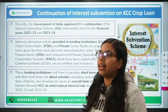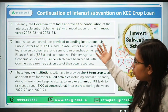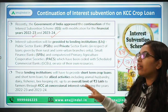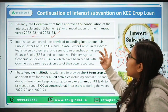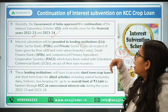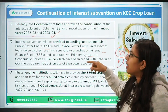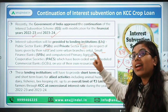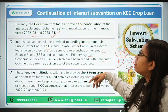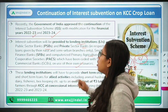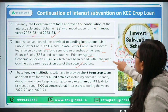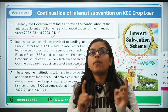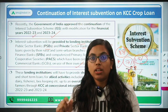Recently, the government has approved continuation of the scheme for financial years 2022-23 and 2023-24. Interest subvention will be given to lending institutions such as all public sector banks, private sector banks, small finance banks, and computerized primary agricultural cooperative societies. PACOs incorporated with scheduled commercial banks using their own resources are also eligible. Payment banks are excluded because they do not provide any kind of credit — they are not lending institutions.